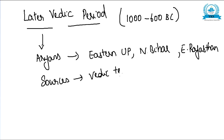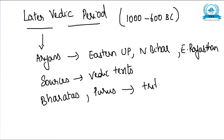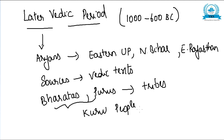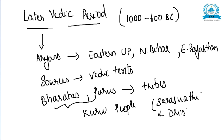These Vedic texts were compiled after the age of the Rig Veda. The Bharathas and Purus were the two major tribes. They combined and thus formed the Kuru people. Initially they lived between the Saraswati and Drishadwati rivers, just on the fringe of the Doab.